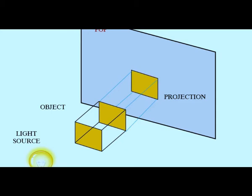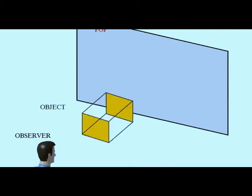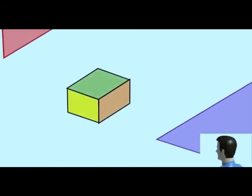Orthographic projection, sometimes referred to as orthogonal projection, is a means of representing three-dimensional objects in two dimensions. It is a form of parallel projection in which all the projection lines are orthogonal to the projection plane, resulting in every plane of the scene appearing in affine transformation on the viewing surface. The obverse of an orthographic projection is an oblique projection, which is a parallel projection in which the projection lines are not orthogonal to the projection plane.